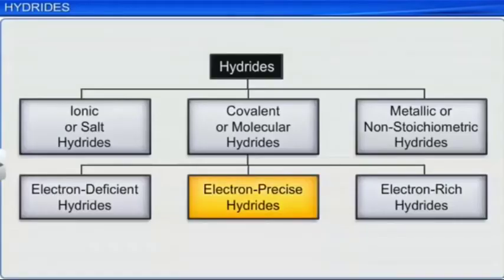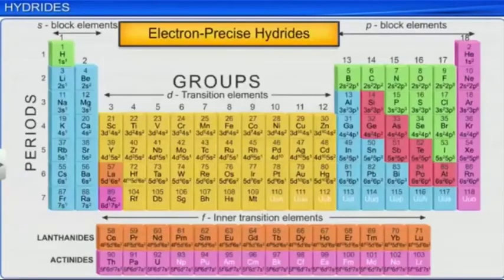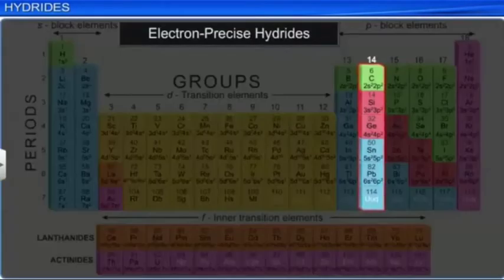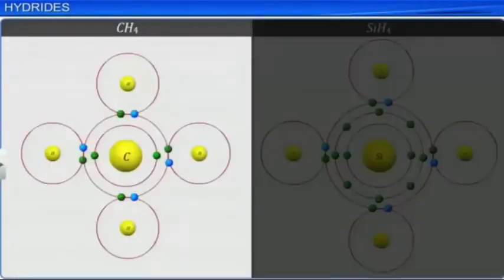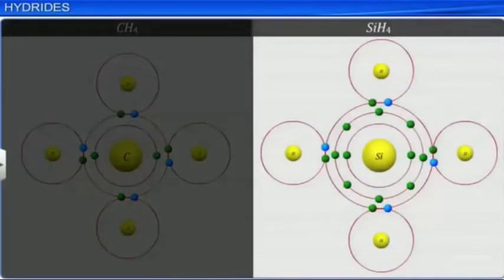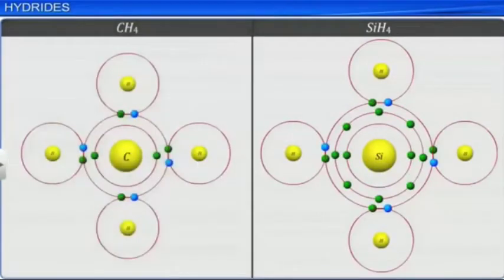Electron-precise hydrides have the required number of electrons to write their Lewis structure. In other words, they have complete octets and are formed by the elements of group 14. For example, in methane CH4 and silane SiH4, both have the elements of group 14. In other words, carbon and silicon have four electrons in their outermost shells and form four covalent bonds with four hydrogen atoms to complete their octet.